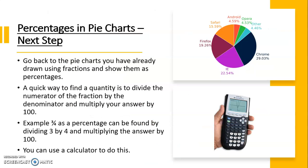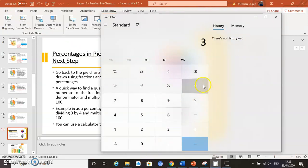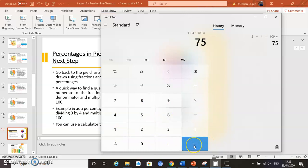For your next step on pie charts, I'd like you to go back to the pie charts you've already drawn using fractions and show them as percentages. A quick way to do that is by dividing the numerator of the fraction by the denominator, and then multiplying the answer by 100. For example, 3 quarters as a percentage: divide 3 by 4 and multiply by 100 — you could use a calculator. 3 divided by 4 multiplied by 100 is 75, so 3 quarters as a percentage is 75%. Hopefully you enjoy finding percentages using your pie charts. Bye for now.